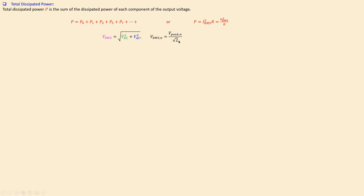The RMS voltage for the nth harmonic equals the peak value of that harmonic divided by √2. This formula is only valid for pure sine waves, so by decomposing our non-sinusoidal signal into pure sine waves using Fourier series, we can apply it to each harmonic term. That's the power of the Fourier series approach.